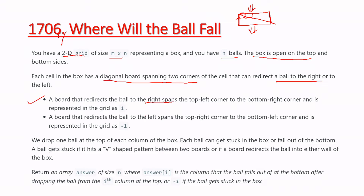The board spanning top-left to bottom-right is represented as 1. The board that redirects the ball to the left spans the top-right corner to the bottom-left corner, and that is represented as minus 1.